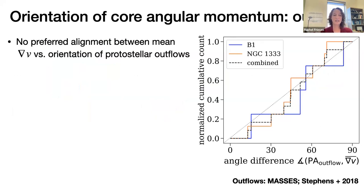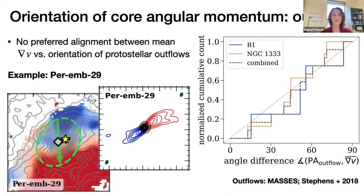We also checked the orientation of velocity gradients against outflows. In a simple picture of core collapse, you might expect the velocity gradient to track disk rotation and the outflow to be perpendicular. But again, we find no preferred alignment between the mean velocity gradient in the cores and the orientation of protostellar outflows. One example, Per M29, shows outflows from the MASSES survey by Stevens et al. — the velocity gradient goes one way and the outflow is neither aligned nor perfectly 90 degrees anti-aligned.